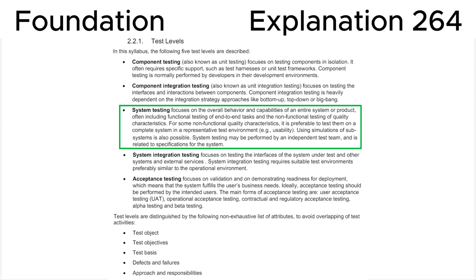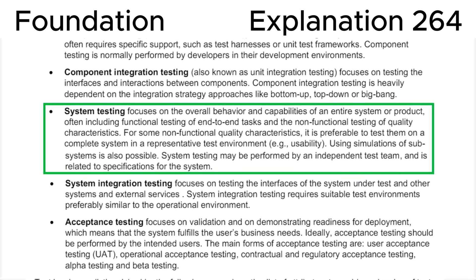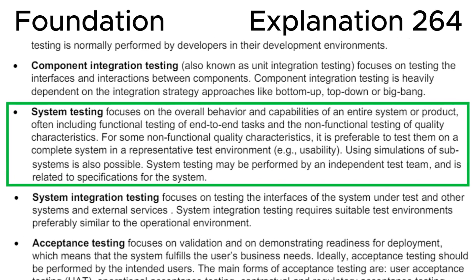Let's look at section 2.2.2.1 — Test Levels — in the ISTQB syllabus, where we can see that system testing focuses on the overall behavior and capabilities of an entire system or product, often including functional testing of end-to-end tasks and non-functional testing of quality characteristics.